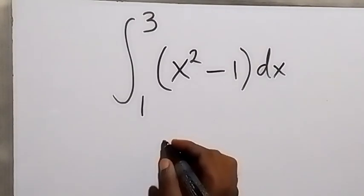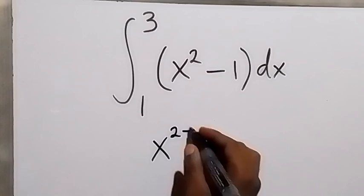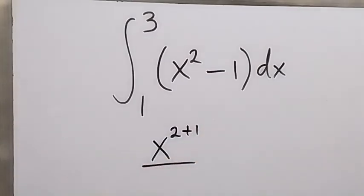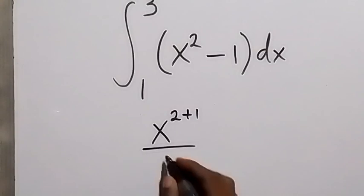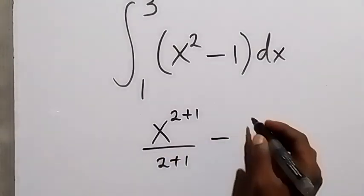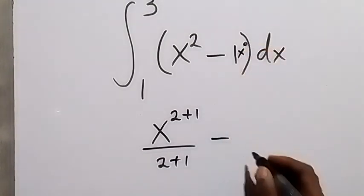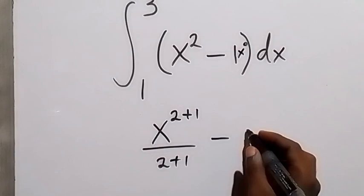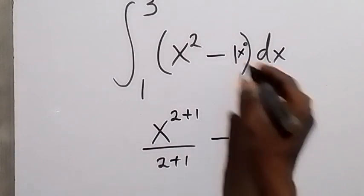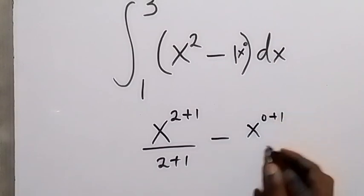x raised to power 2 plus 1, then divide by 2 plus 1, then minus. Here we have an invisible x raised to power 0, that's x raised to power 0 times 1, so x raised to power 0 plus 1, then over 0 plus 1.